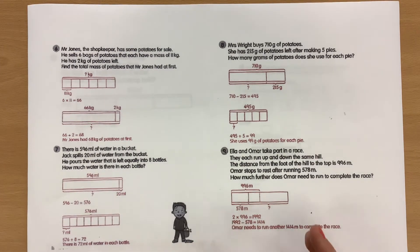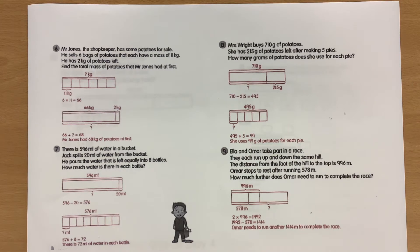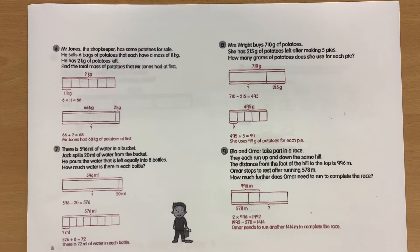So hopefully you were able to work your way through these questions and do it step by step. Let's have a look at this one. Ella and Omar take part in a race. They each run up and down the same hill. The distance from the foot of the hill to the top is 996 metres. Omar stops to rest after running 578 metres.